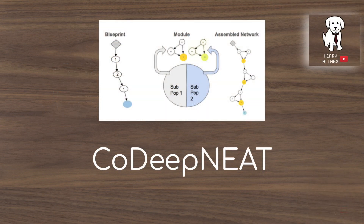Thanks for watching this video on the CoDeepNEAT neural evolution and neural architecture search algorithm. Please subscribe to Henry AI Labs for more deep learning and artificial intelligence videos, and stay tuned for more videos on neural evolution for AutoML, neural architecture search, and hyperparameter optimization for the month of September.